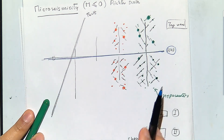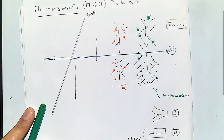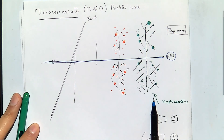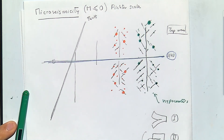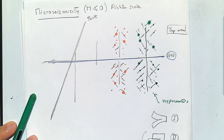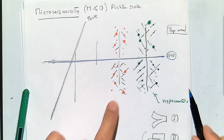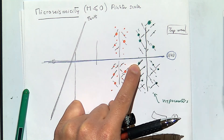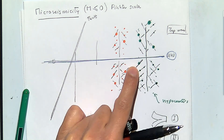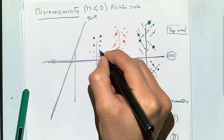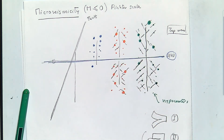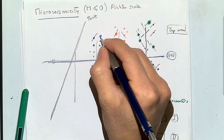Micro seismicity is very useful because as you do each stage and monitor the hydraulic fracturing job, you can see how the regions around your stage light up. You can also assess in height whether the fracture stays where you expect it or goes up or down. Sometimes you may not want the fracture to cross into a certain formation, and micro seismicity lets you check that.